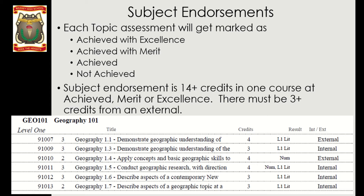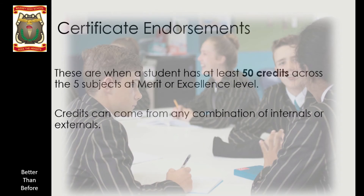On top of subject endorsements, we also have certificate endorsements — these are for the overall certificate at that particular level. As you know, 80 is the magic number, but if students get at least 50 credits across their five subjects at either Merit or Excellence, they will have NCEA Level 1 endorsed with Merit or endorsed with Excellence. That's another really great thing for students to be aiming for.